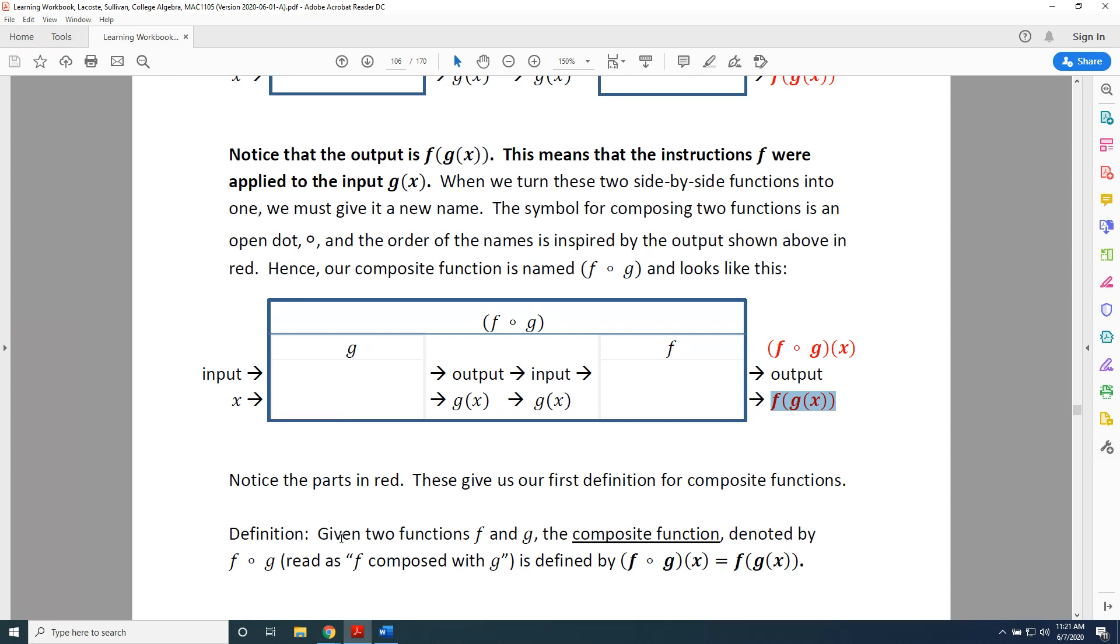Definition: Given two functions f and g, the composite function, denoted by f composed with g, is defined by f composed with g of x equals f of g of x.